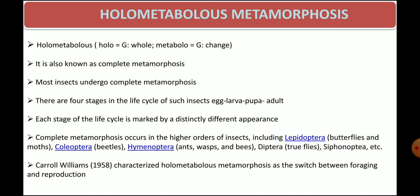Holometabolous metamorphosis is also called complete metamorphosis. As the name itself suggests, 'holo' means whole and 'metabolous' means changes. There are 4 stages in the life cycle of a holometabolous insect: egg, larva, pupa, and the final adult, which is the mature stage. Each stage of this life cycle is marked by a distinctly different appearance.